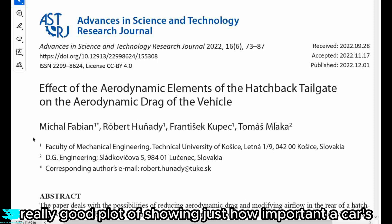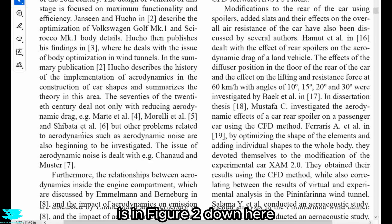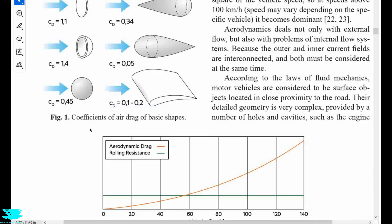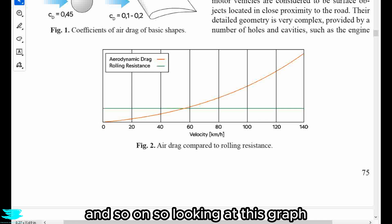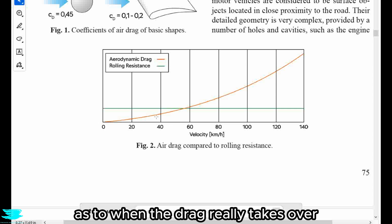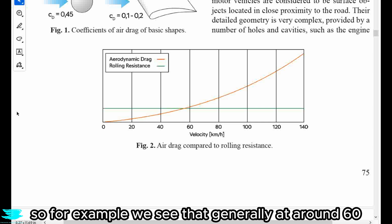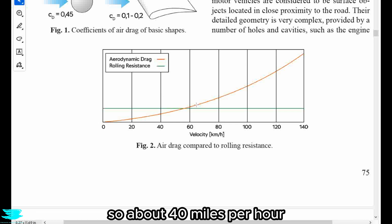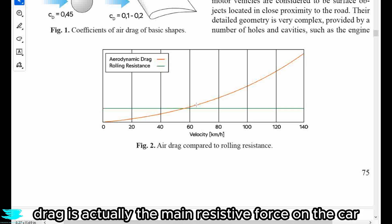Now, a really good plot showing just how important a car's drag is compared to the rolling resistance is in figure 2 down here. We often get a question about when a car's drag is important. So looking at this graph, for those of you interested as to when the drag really takes over as the main resistive force, you can really determine that on your own requirements. We see that generally at around 60 to 70 kph, so about 40 miles per hour, the drag of a car pushes back more than the rolling resistance. So at this point, the drag is actually the main resistive force on the car.